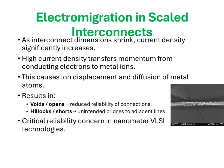Electromigration is especially problematic in advanced nodes where interconnects are extremely narrow and current density is very high, making it a major reliability bottleneck in nanometer VLSI designs. To mitigate this, engineers often use special interconnect materials, barrier layers, and carefully optimized current limits to balance performance with long-term reliability. While device-level scaling challenges like hot carrier effects degrade transistor characteristics, electromigration represents the interconnect-level challenge that can ultimately threaten the lifetime of an integrated circuit.